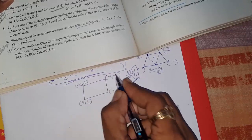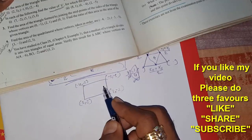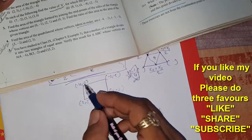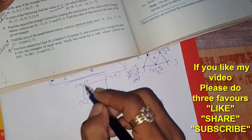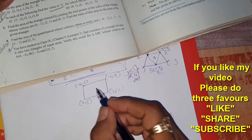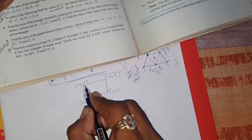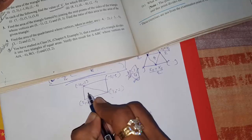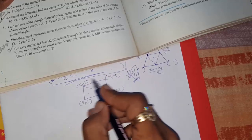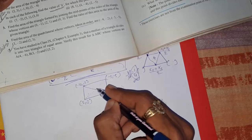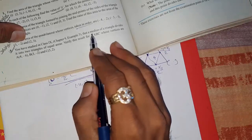In some textbooks or reference books they give four coordinates without specifying the order, so you have to plot them on the Cartesian plane, label them A, B, C, D in order, and then proceed. Since there is no direct formula for the area of a quadrilateral, we divide it into two triangles — by drawing one diagonal. We separately find the area of each triangle and then add them together to get the total area of the quadrilateral. You can draw either diagonal — both approaches work.